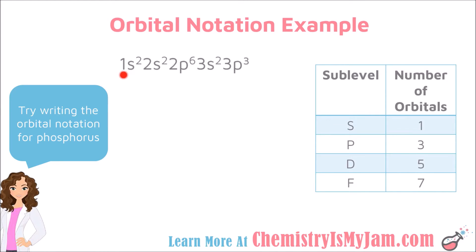The first thing I see is 1s². The s tells me I should start with a sublevel that only has one orbital, so I'm going to draw one box and label it 1s. I see that this 1s sublevel should have two electrons, so I'm going to have two arrows — one going up and one going down. I now go to the next part, which is 2s². It's still an s sublevel, so it gets one orbital, labeled 2s, and it should once again have two electrons.